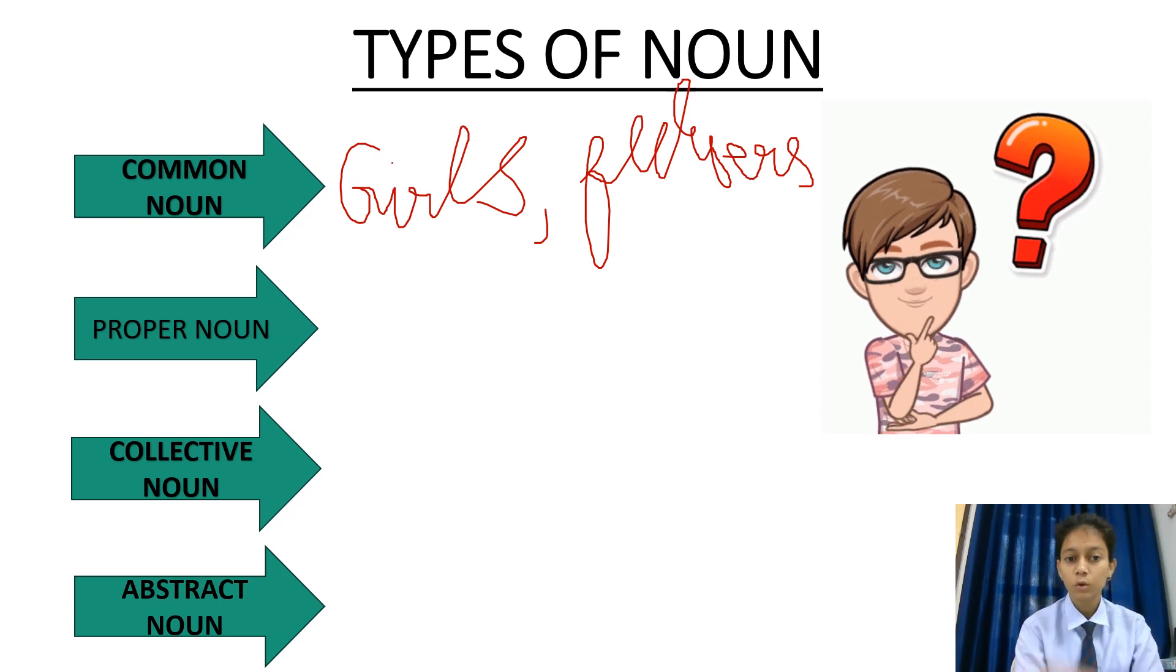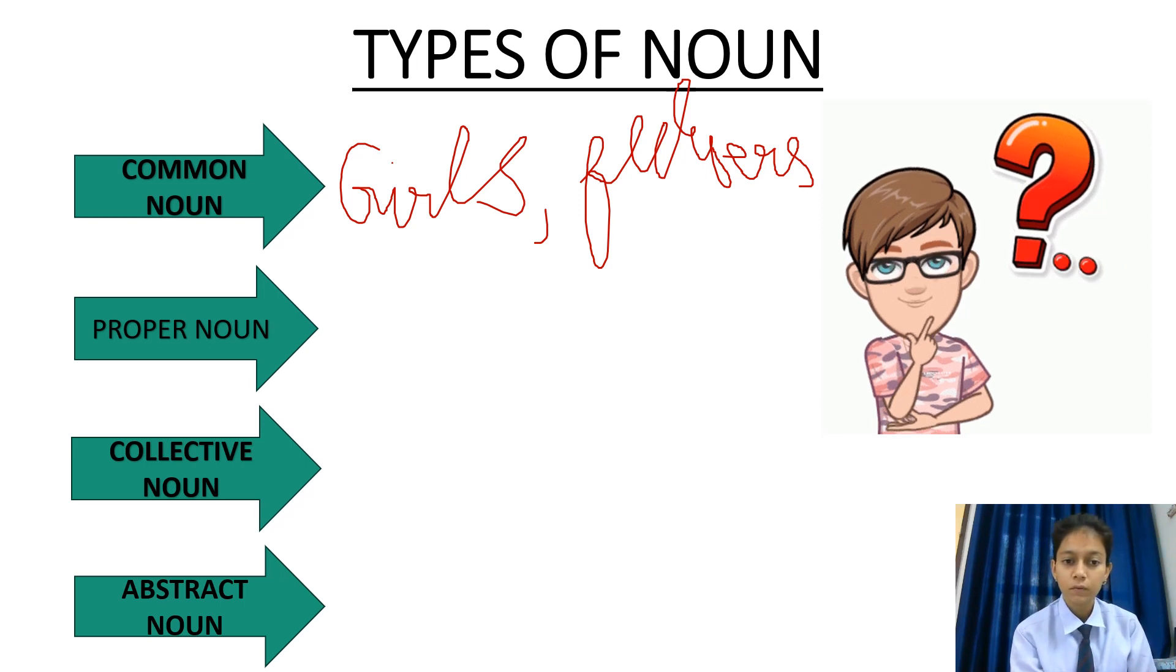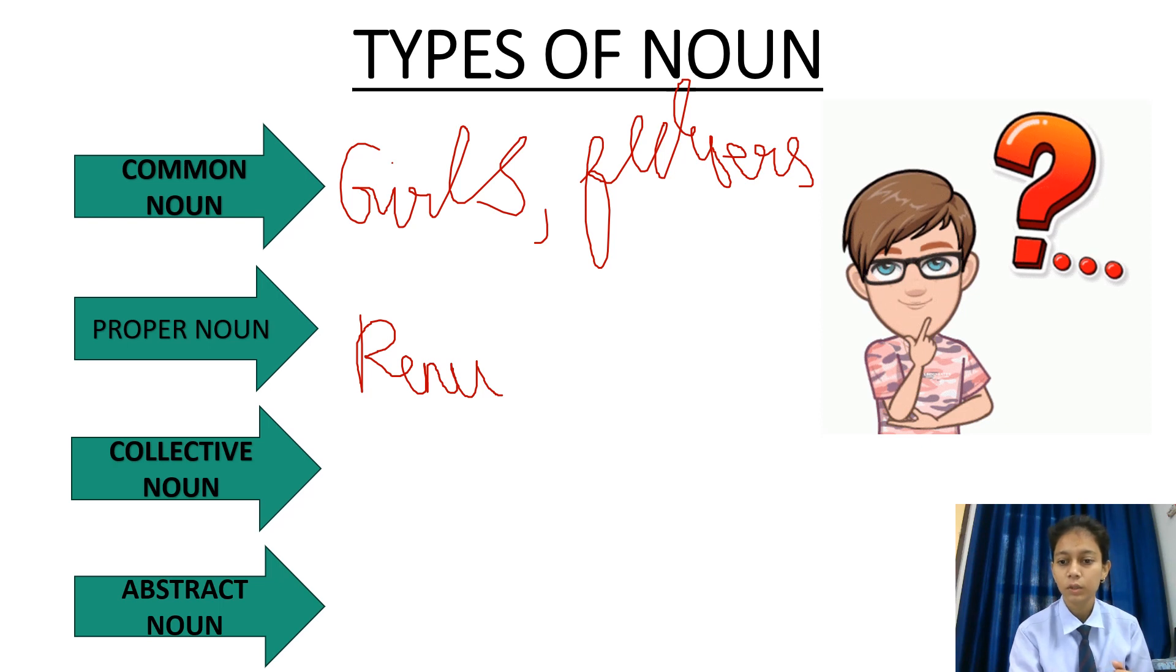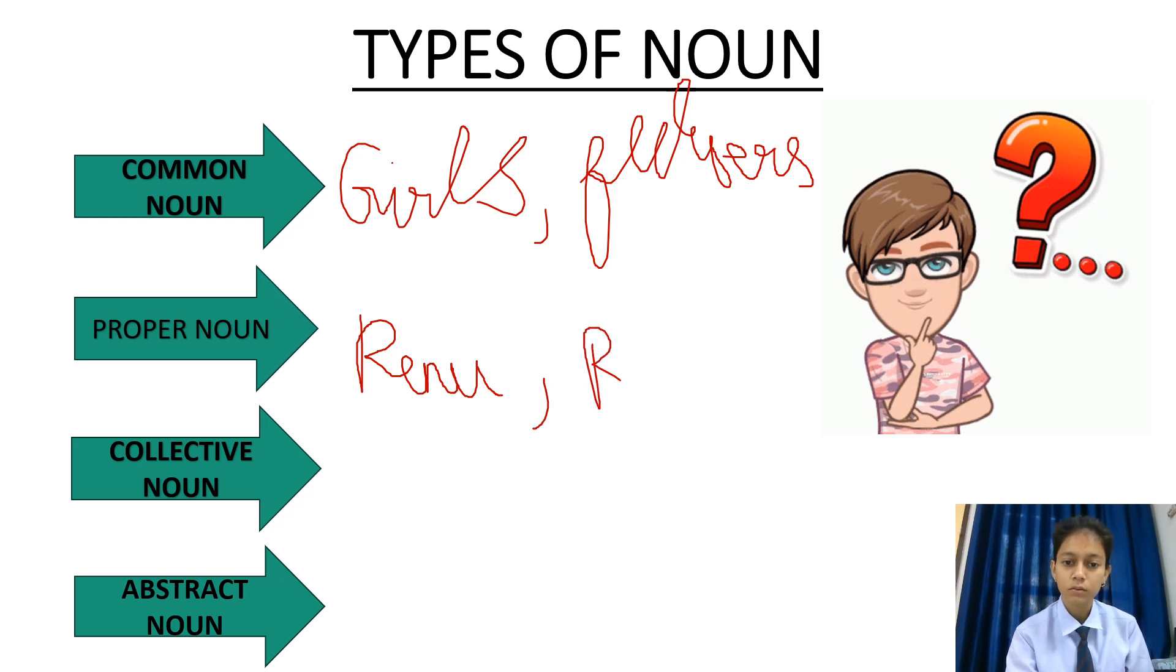Proper noun. In common noun, we are not mentioning specific, we are only mentioning girls. In proper noun, we specify the person. Let's take example of common noun girls. In proper noun girls, I am mentioning Renu. Renu is proper noun because I am specify that girl. Let Renu, please come here. In common noun, girls, please come here, so all girls can come. In proper noun, I am mentioning the specific person. For example, flower, rose. I like rose. I like flowers.